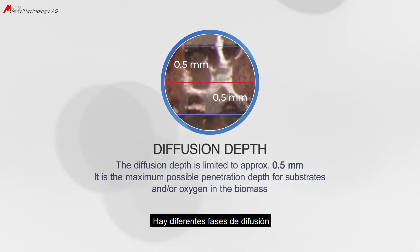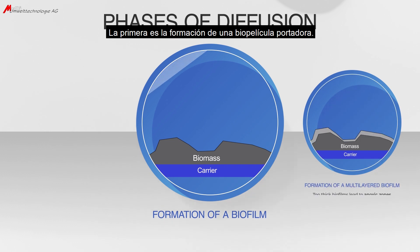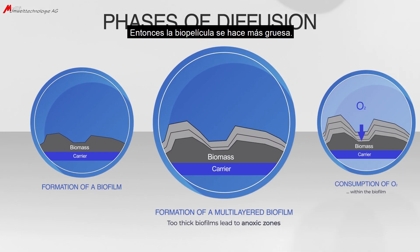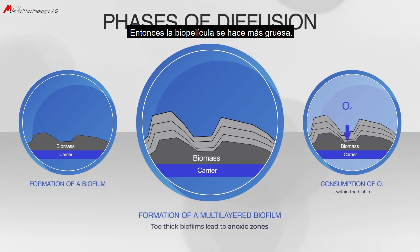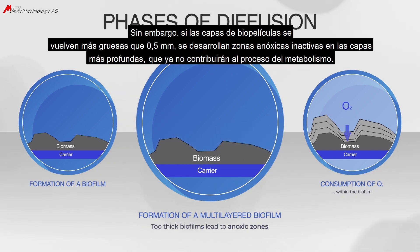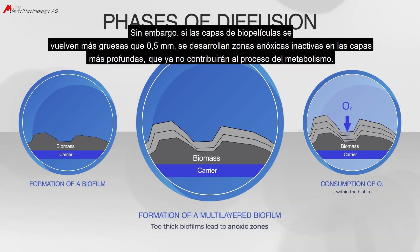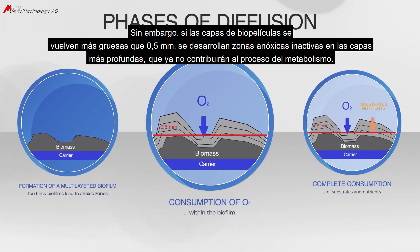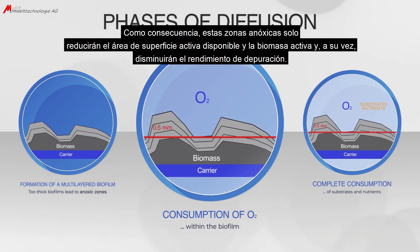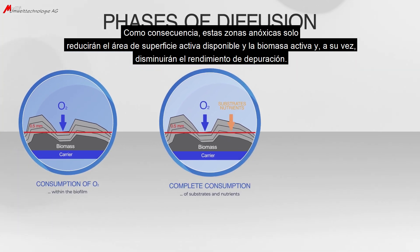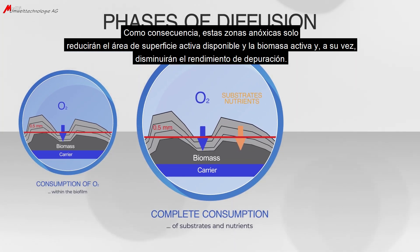There are different phases of diffusion. The first is the formation of a biofilm on the carrier surface, then the biofilm gets thicker. However, if the biofilm layers exceed 0.5 mm in thickness, it leads to the development of inactive anoxic zones in the deeper layers, which will no longer contribute to the metabolism process. As a consequence, these anoxic zones only reduce the available active surface area and active biomass, in turn lowering the removal performance.